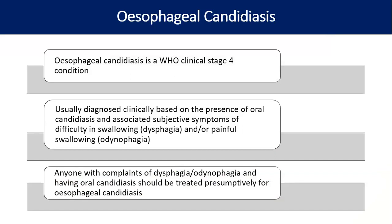Esophageal candidiasis is a WHO stage 4 condition. It is usually diagnosed clinically based on the presence of oral candidiasis along with dysphagia or odynophagia. Dysphagia means difficulty in swallowing, while odynophagia means painful deglutition. Any PLHIV with symptoms of dysphagia or odynophagia and evidence of oral candidiasis should be presumptively treated for esophageal candidiasis. However, it can also be confirmed by endoscopy. Not eating and consequent weight loss is also associated, particularly with lower CD4 count, especially for oral thrush. Esophageal thrush qualifies the patient for WHO stage 4, and symptoms like weight loss and lethargy should not be attributed to esophageal candidiasis alone in adults.